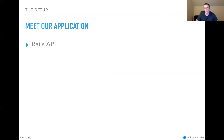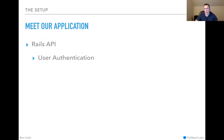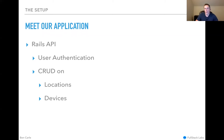The setup: this is a Rails API, which is what we care about for this talk — not only because this is a Rails meetup but because that's where the attack happened. A couple of key things this API does: it handles user authentication as the entry point for users, and it does CRUD on objects users care about — things like locations and devices. We actually have physical hardware in this ecosystem, so it's a cloud app that manages physical hardware out in the world.